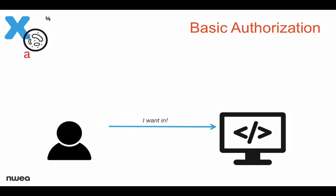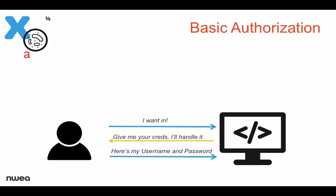It always starts with the user saying to a web application, I want in, I want to see what you have. That web application, in a basic authorization situation, will simply throw up a username and password form. That combination of the username and password is then passed back to the web app. In a basic auth or forms-based login situation, the user may have to do this over and over again on different applications because the application doesn't talk to anybody else.